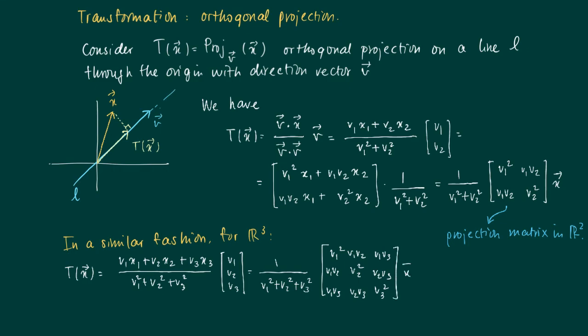Times the vector x. And this matrix is called the projection matrix in R3.